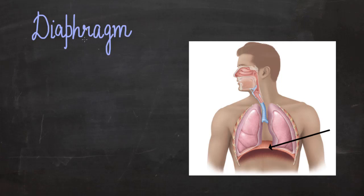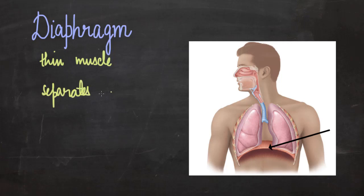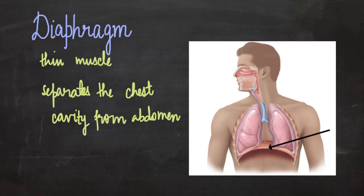The next part of the respiratory system is the diaphragm. The diaphragm is a thin muscle on which the lungs rest and support themselves. This thin muscle separates the chest cavity from the abdomen. The movement of the diaphragm helps in the inhalation and exhalation of air, making it an important part of the human respiratory system.